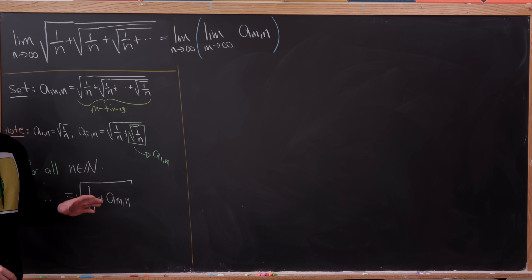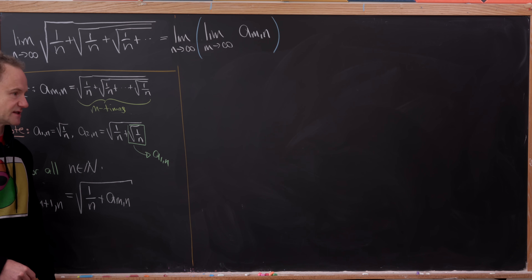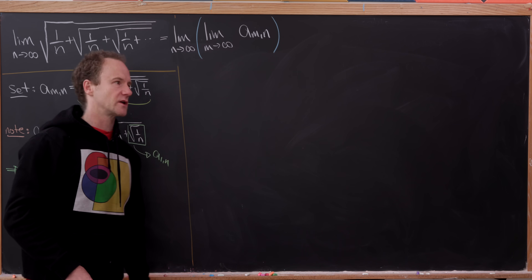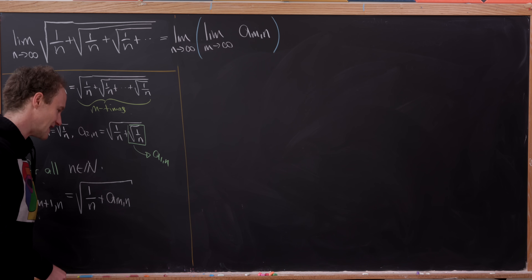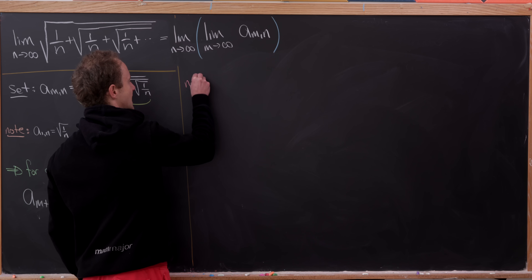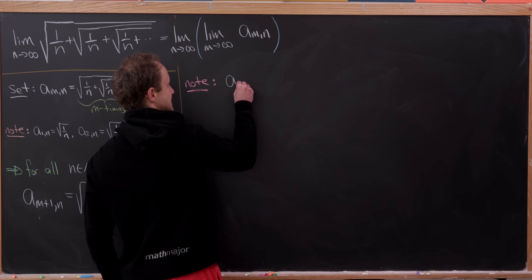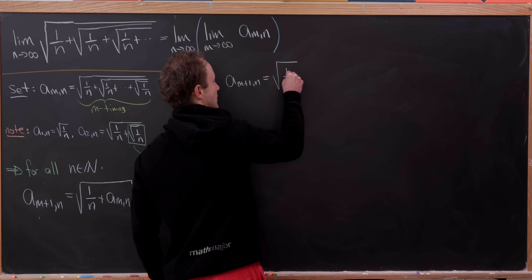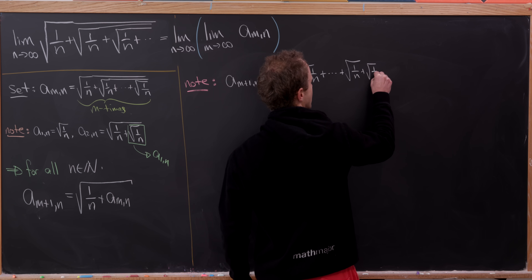We want to show that the inner limit — the limit in the blue parentheses — converges for all values of n, using the Monotone Sequence Theorem. That means showing the sequence is both bounded and monotone. To show it's increasing, notice that a_{m+1,n} contains m+1 copies of 1/n, and dropping that last term gives something smaller.